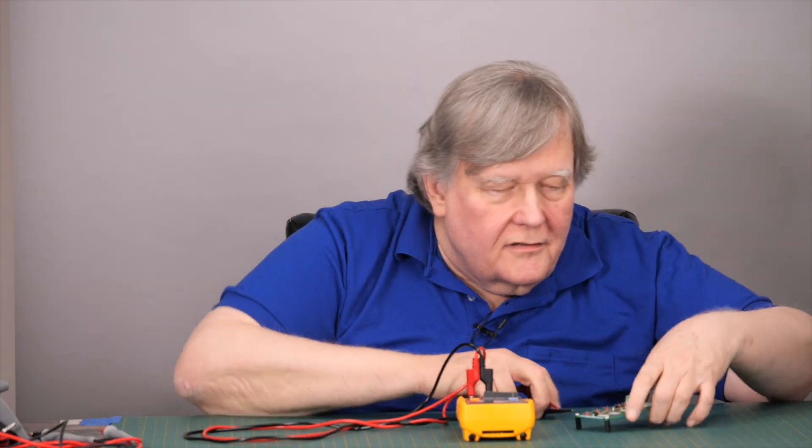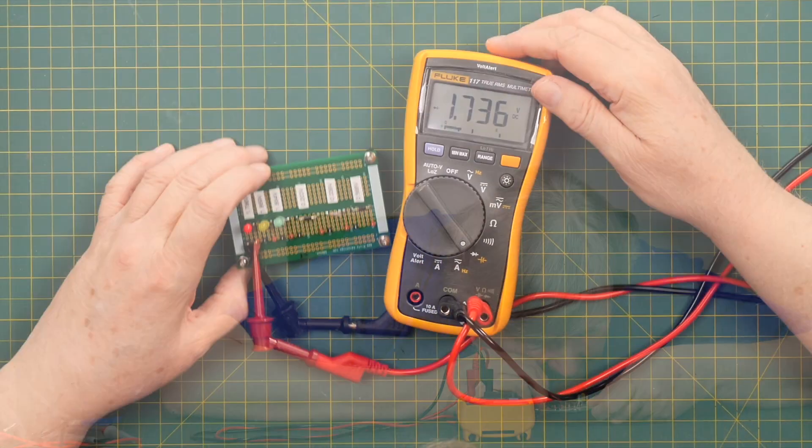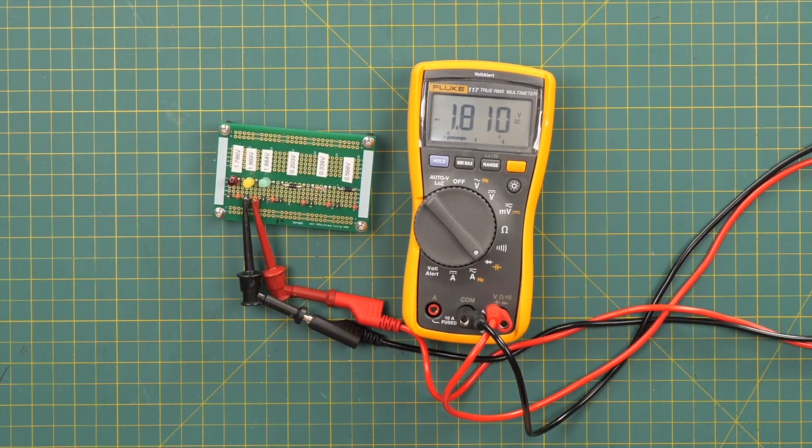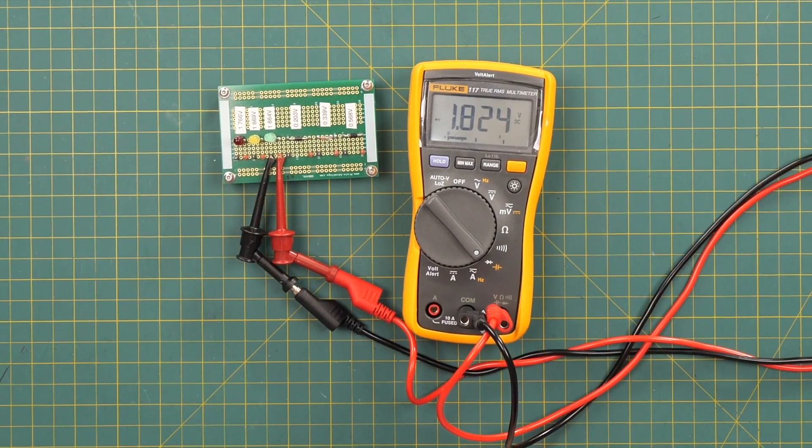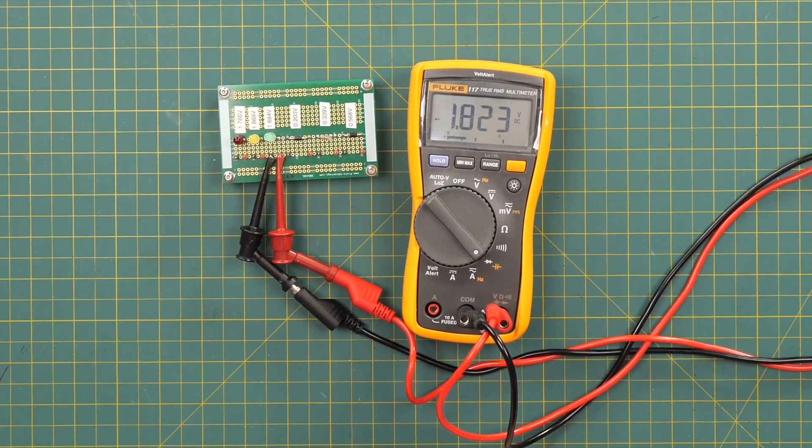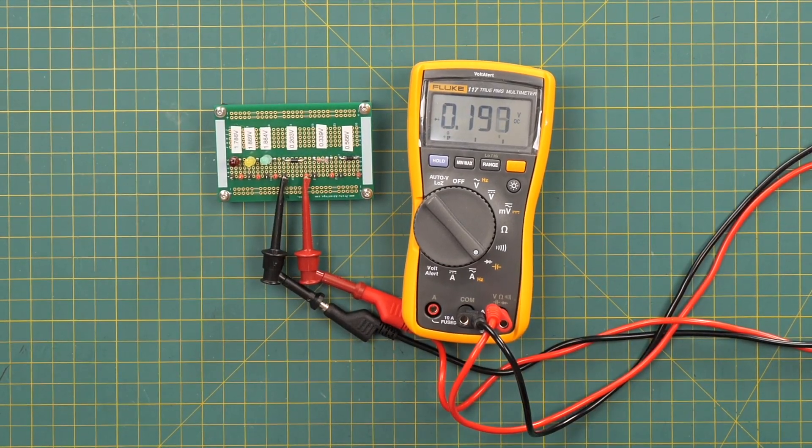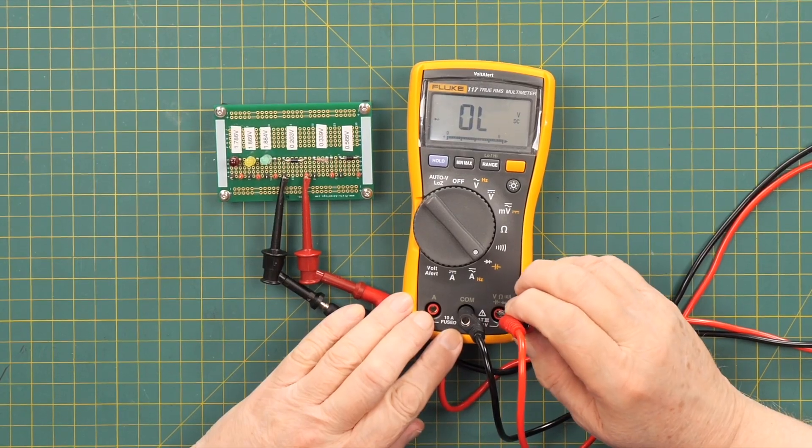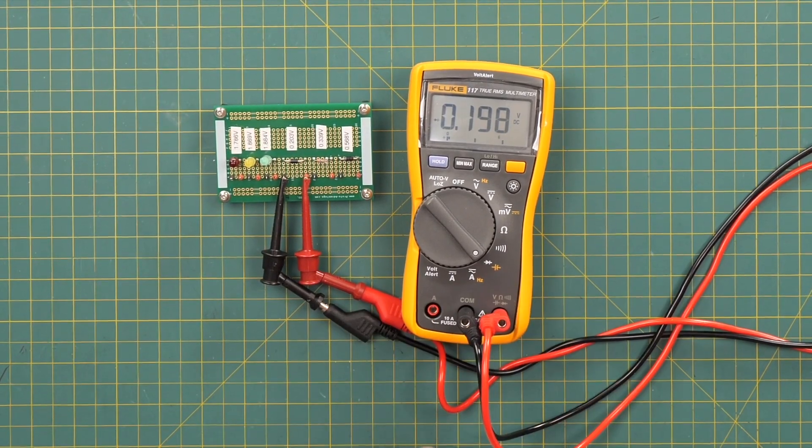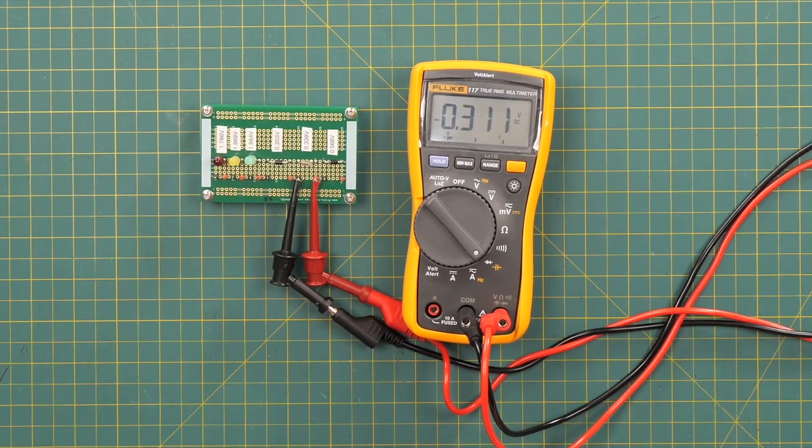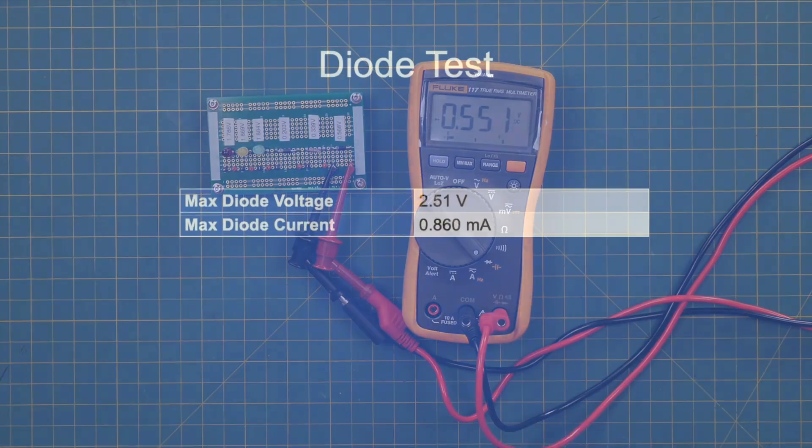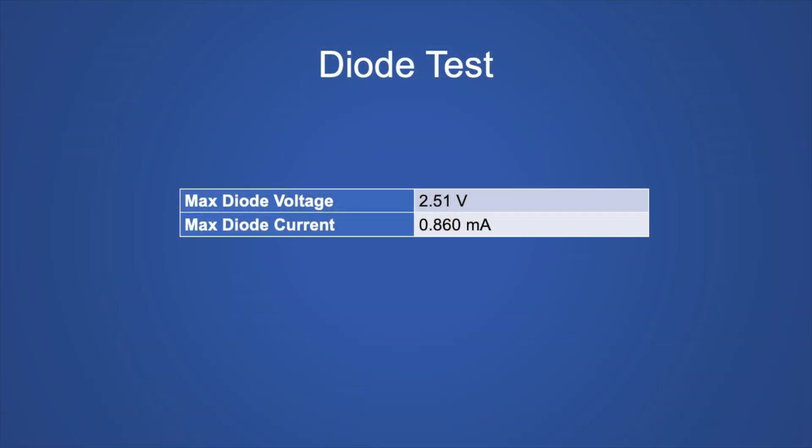Now it's time to do some diode checks. We'll start with our favorite diodes, LEDs. It can read the forward voltage and it can light up the LED but no chirp. The yellow guy can read the forward voltage, no chirp. The green guy is kind of dim, but it is sort of lighting it. It reads the forward voltage, no chirp. Schottky diode reads the forward voltage and it does chirp. Let me let you hear that. It's a very quiet little chirp. That is a small signal diode and it chirped. The diode test voltage was 2.51 volts and the maximum current was 0.86 milliamps.